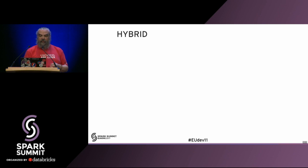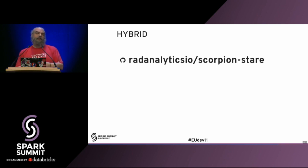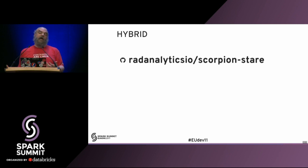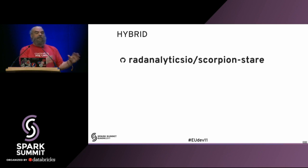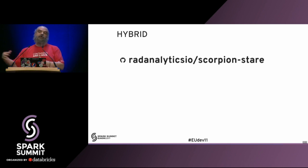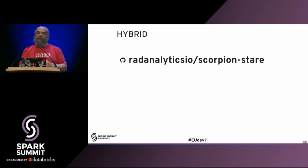Our group has a community project called radanalytics.io and we have a code piece called Scorpion Stare. Scorpion Stare will connect to a Graphite sink, then talk to a Kubernetes underlayer, and automatically scale up your clusters based on what it sees in the load. It looks at a metric in the driver about the number of expected executors the driver is planning. If the number of expected executors is greater than the number of workers deployed into your cluster, it starts scaling out workers until those numbers balance, allowing you to react very quickly to what's happening within your application.